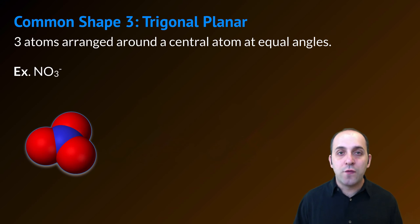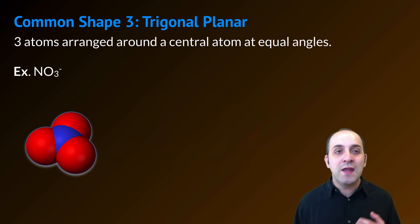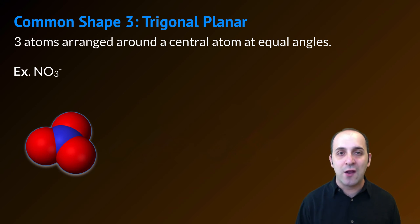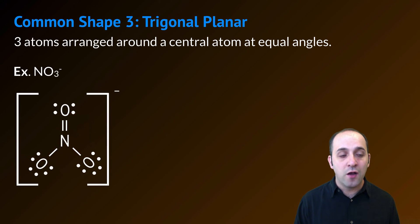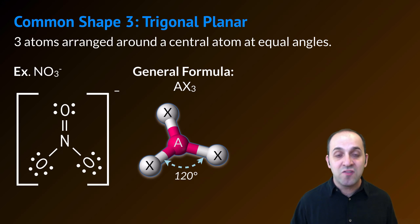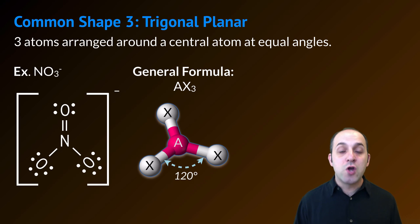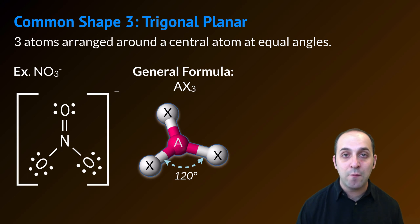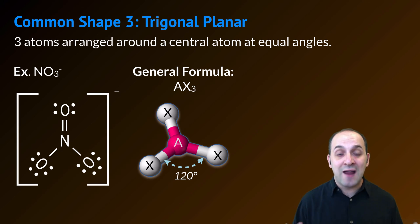Our next common shape is the trigonal planar shape. In a trigonal planar shape, you're going to have three atoms arranged around a central atom at equal angles. Our example is the nitrate polyatomic ion. This is what the polyatomic ion's Lewis structure looks like — I did not draw the resonance structures for the purpose of this discussion. A trigonal planar structure always has the general formula AX3: our central atom makes three bonds to three different atoms, with no lone pairs on the central atom. Since all of these bonds exist in the same plane over a 360-degree rotation around the central atom, the bond angle between any two adjacent X atoms is going to be 120 degrees.